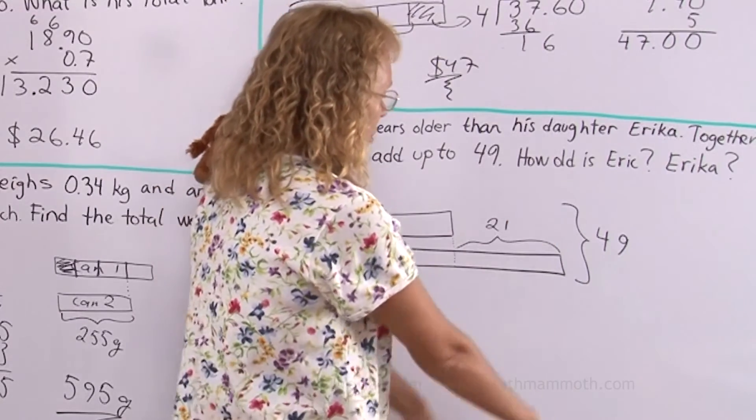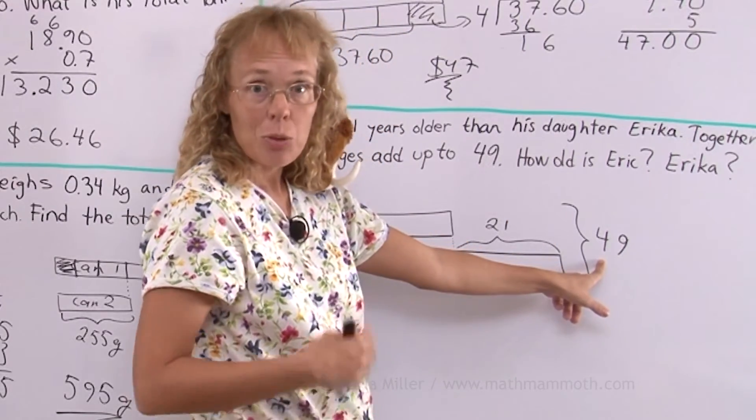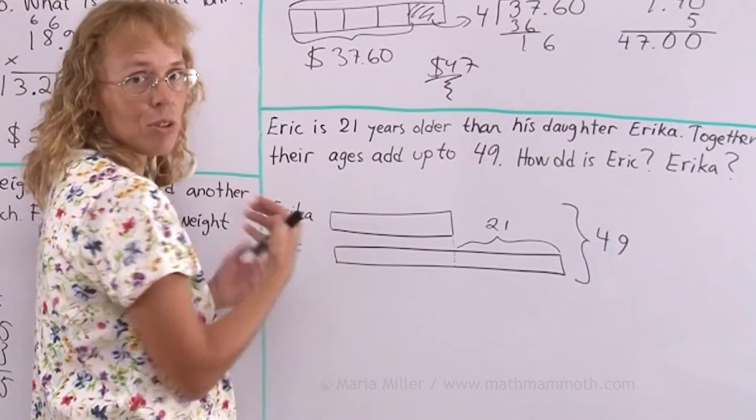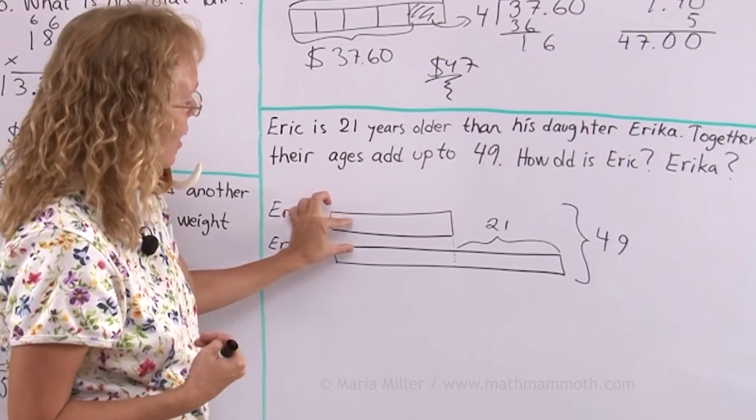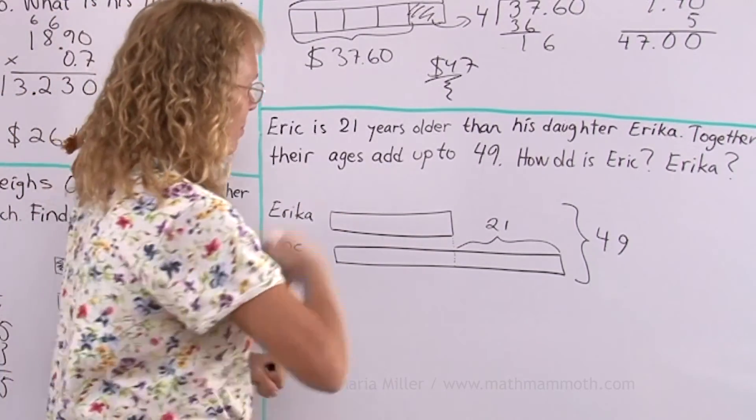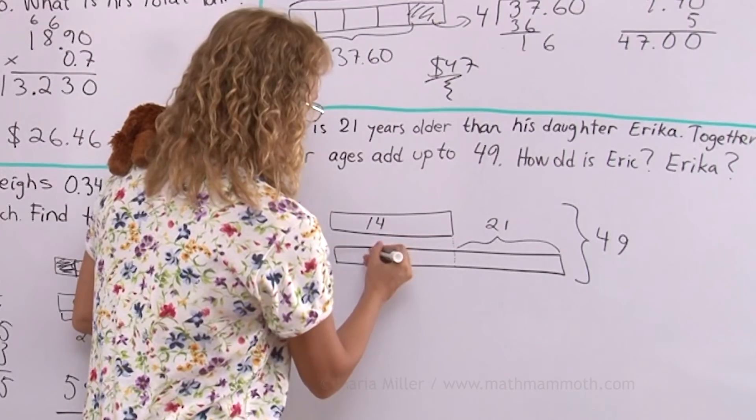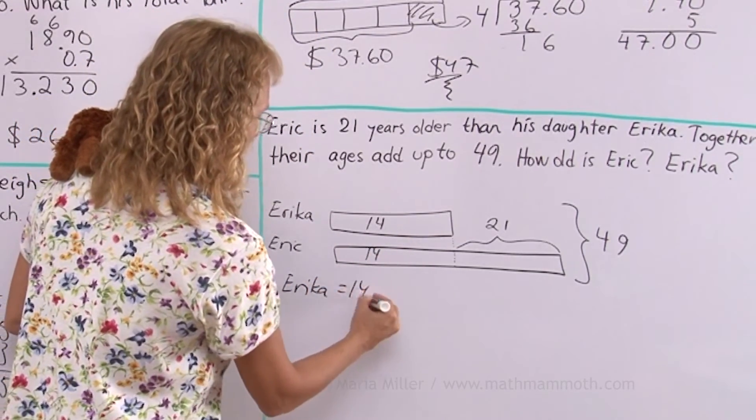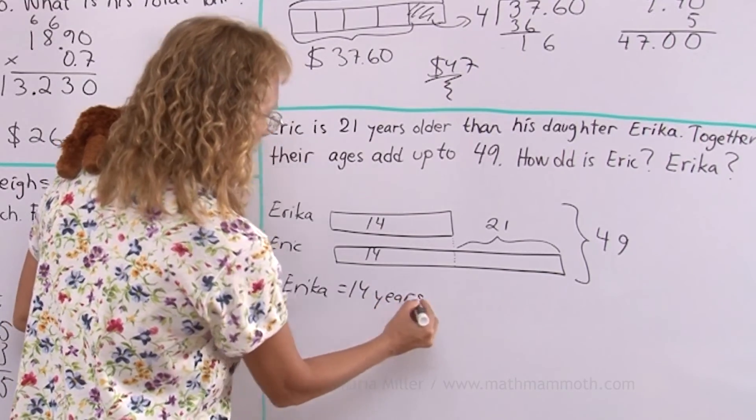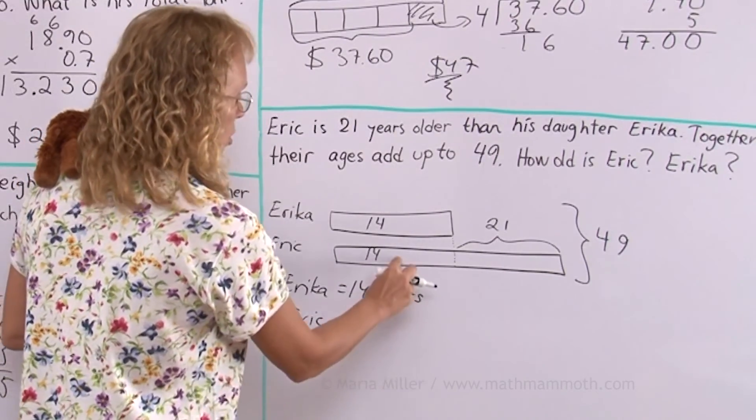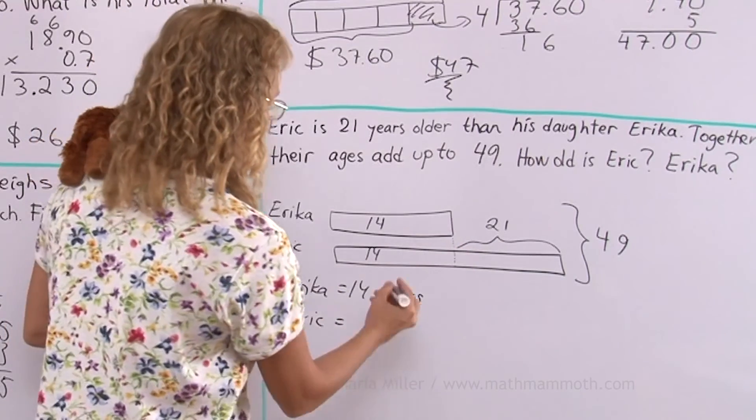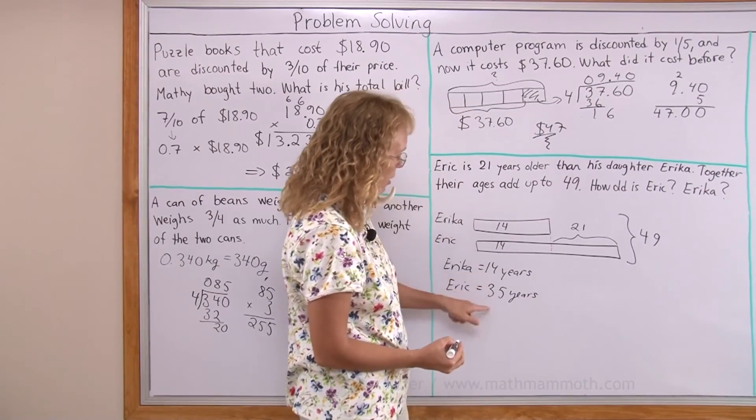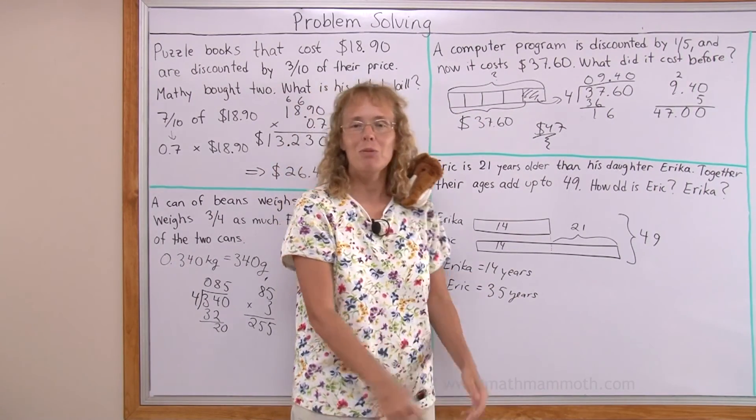Take away 21 so this number then will be 28, right? These two parts here have to equal 28 together and since they are equal each one of them is 14. So Erika is 14 years. Then Eric is 14 plus 21 which is 35 years and that much is if you add these you get 49. So we're all done. I hope this was helpful.